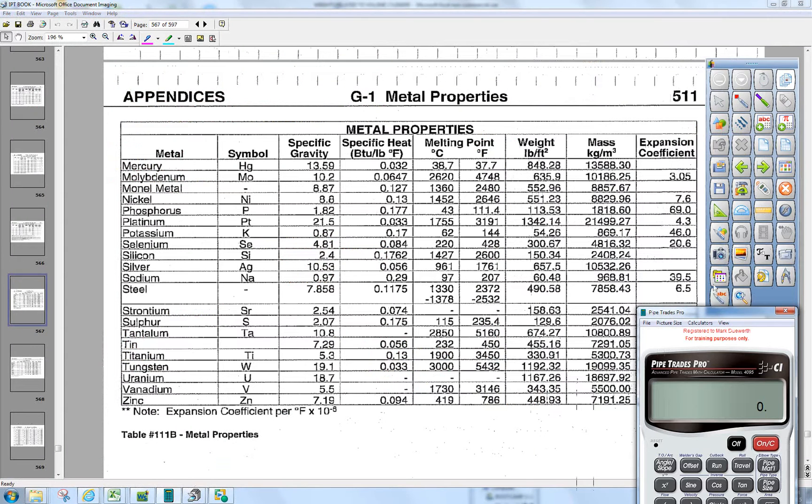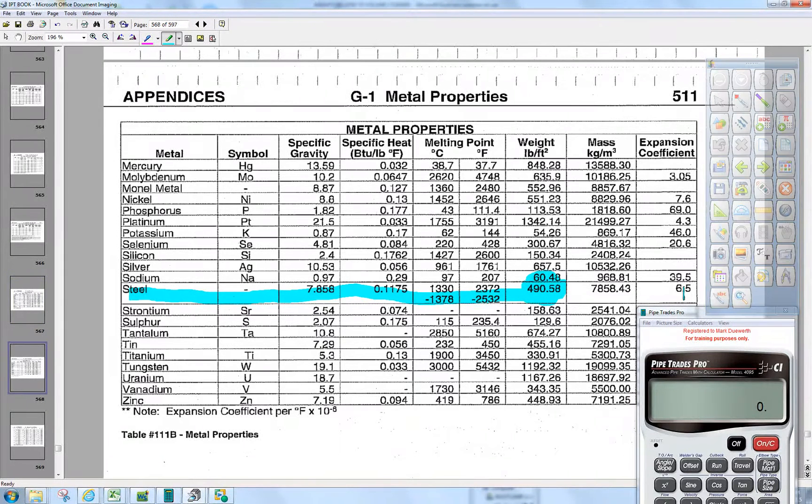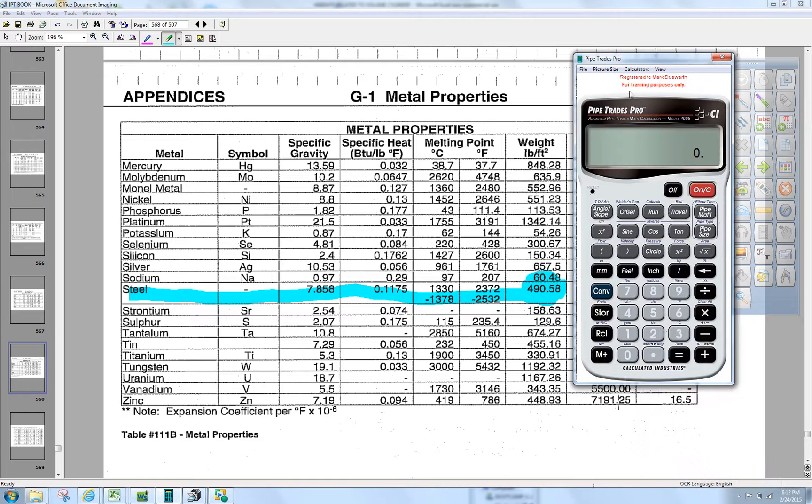You can see that steel, we go across here, we go to steel, and steel is 490 pounds a cubic foot. So what we're going to do is take the calculator and put 490 in there.